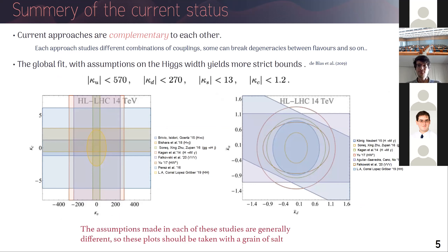We can think of all these approaches as complementary, since each process uses different assumptions. The global fit assumes something about the Higgs width and invisible decays, yielding strong constraints, but it's not the same as direct measurements. Summarizing everything in two plots, there is a hierarchy between the constraints, but each measurement has different assumptions, so these should be taken with a grain of salt. In general, there is a lot of room for improvement since the constraints are still weak.